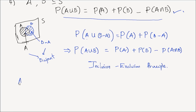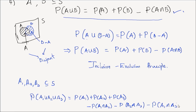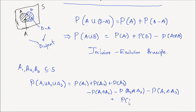In fact, if you have three events A1, A2, and A3 which are subsets of the sample space, then the probability of A1 union A2 union A3 equals P(A1) plus P(A2) plus P(A3) minus P(A1 intersection A2) minus P(A2 intersection A3) minus P(A1 intersection A3) plus P(A1 intersection A2 intersection A3).